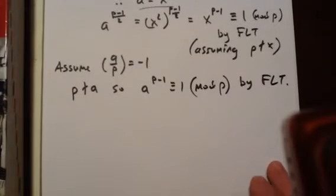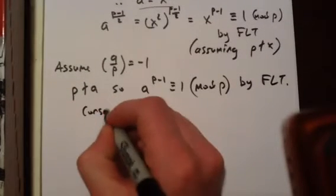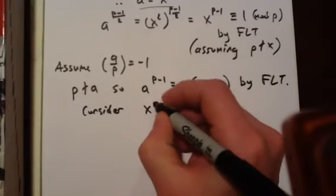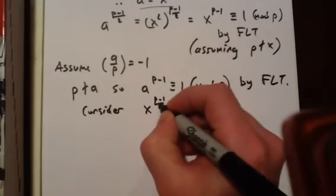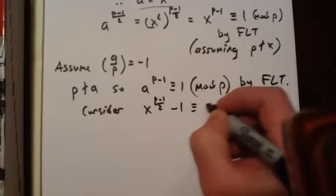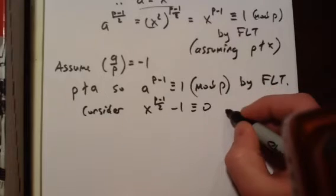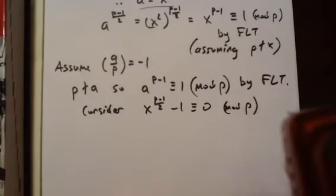And now let's consider the equation X to the P minus 1 over 2 minus 1 is congruent to 0 mod P.